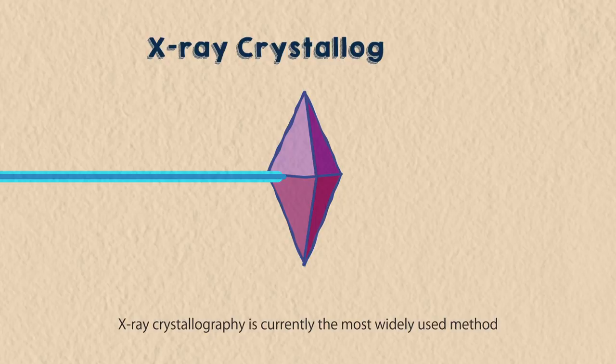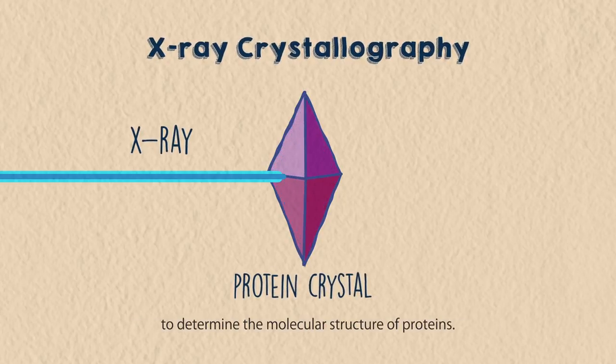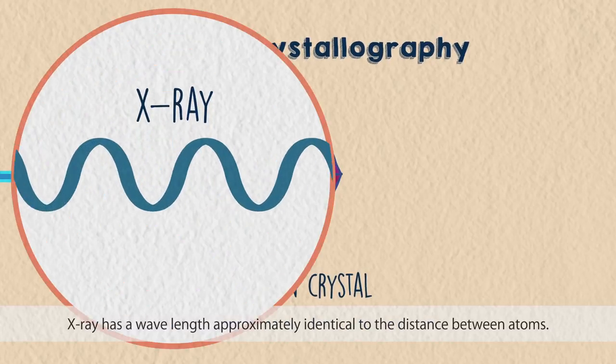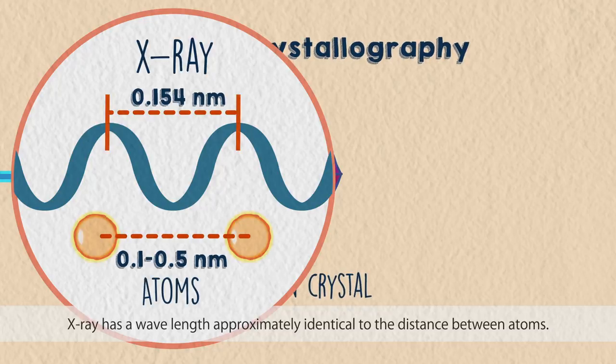X-ray crystallography is currently the most widely used method to determine the molecular structure of proteins. X-ray has a wavelength approximately identical to the distance between atoms.